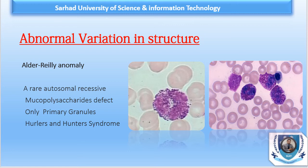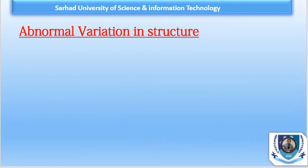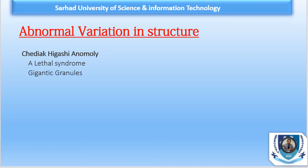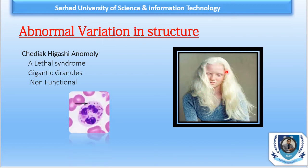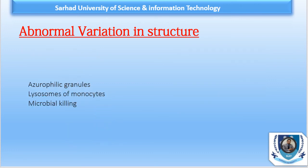Next is Chédiak-Higashi anomaly, which is associated with a potentially lethal disorder known as Chédiak-Higashi syndrome. These cells have very few but gigantic specific staining granules that are unable to fuse with phagosomes, making the granules non-functional. Patients suffering from Chédiak-Higashi syndrome display these characteristic cells in their peripheral smear morphology.